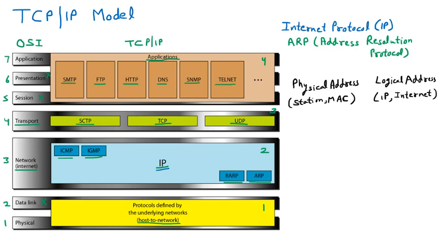These two addresses are very important. When you open your system, the LAN card provides network connectivity, and one address is imprinted on it — the physical address, station address, or MAC address. During communication, we use the logical address, which is the IP address. The IP address is not written anywhere physically; that's why we call it the logical address.